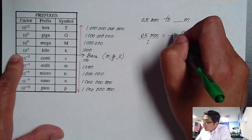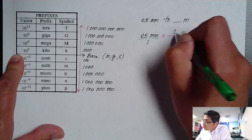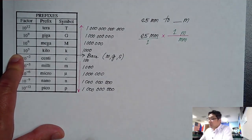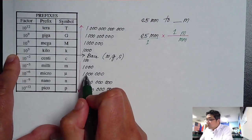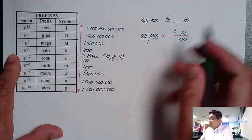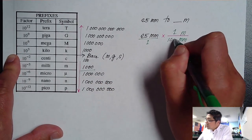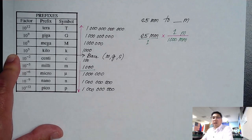And millimeter is at the bottom of the base, so meaning millimeter is smaller than meter. So therefore, for every one meter, so I want this one meter, there is an equivalent of 1000 millimeter. So 1000 millimeter.